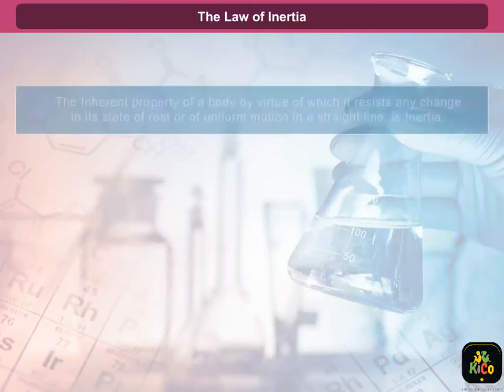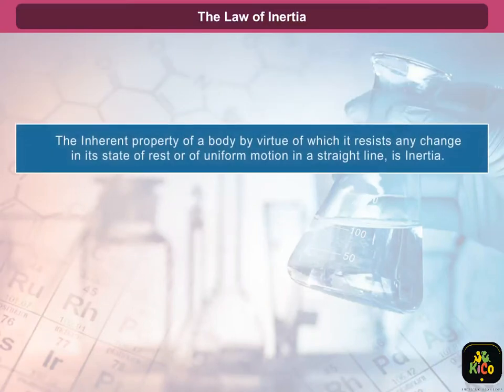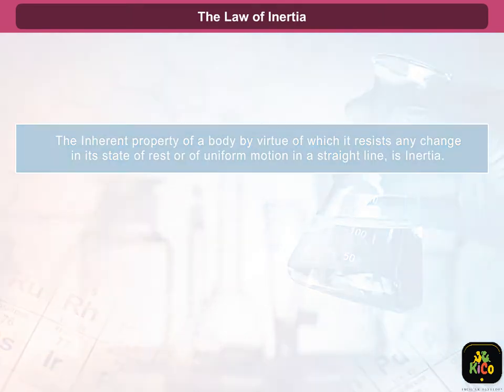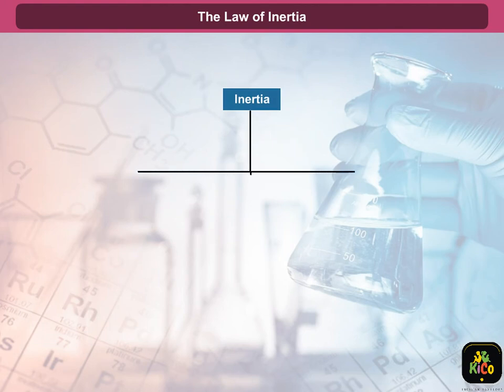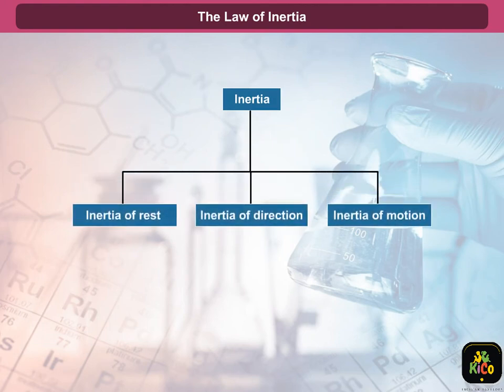The law of inertia: the inherent property of a body by virtue of which it resists any change in its state of rest or of uniform motion in a straight line is called inertia. Inertia is broadly classified into three categories: inertia of rest, inertia of motion, and inertia of direction.